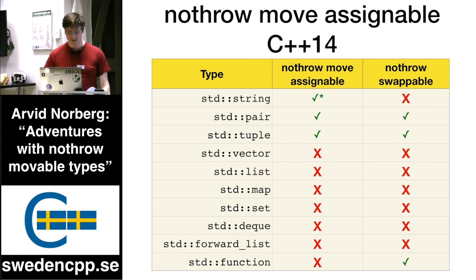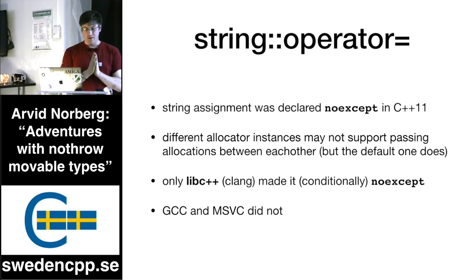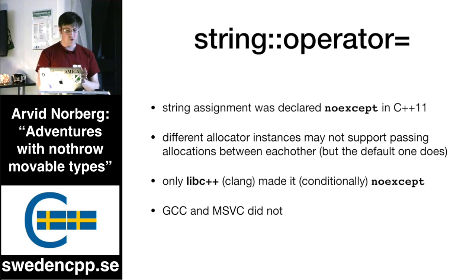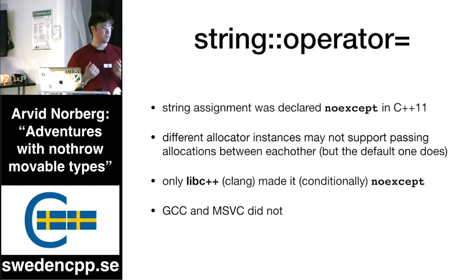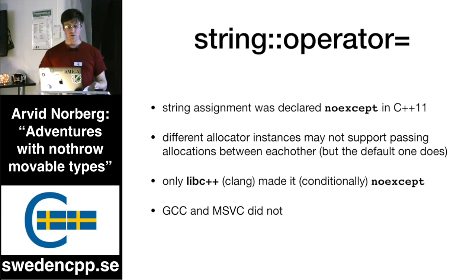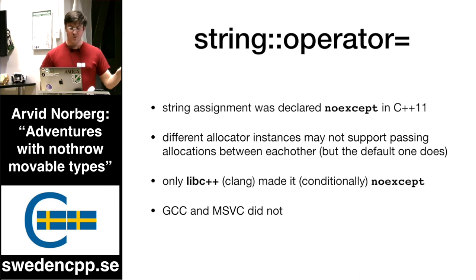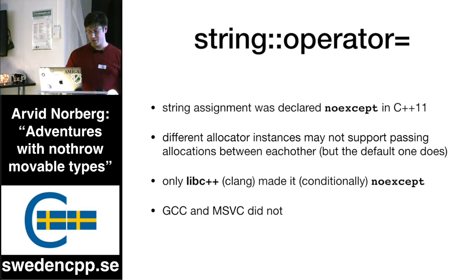The `std::string` example is interesting. String move assignment was declared `noexcept` from the beginning in C++11. However, a problem was discovered: strings with interesting allocators may not actually support taking over ownership of the buffer from another string. Which means in the general case you can't say move assignment is `noexcept` for string. However, libc++ (Clang) figured out that it's important for this to be `noexcept`, so they went to the trouble of specifying the conditions under which you can make it `noexcept`. GCC and Visual Studio did not, so the red crosses still apply to them.